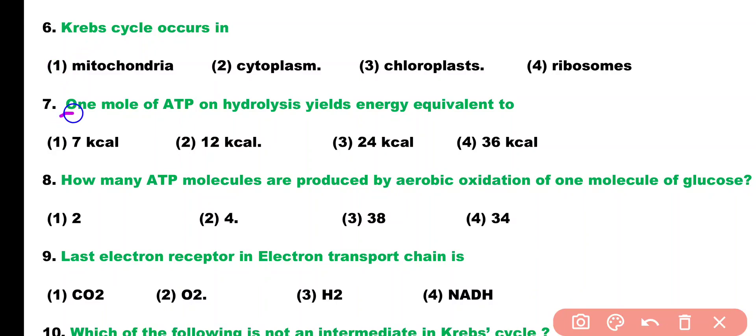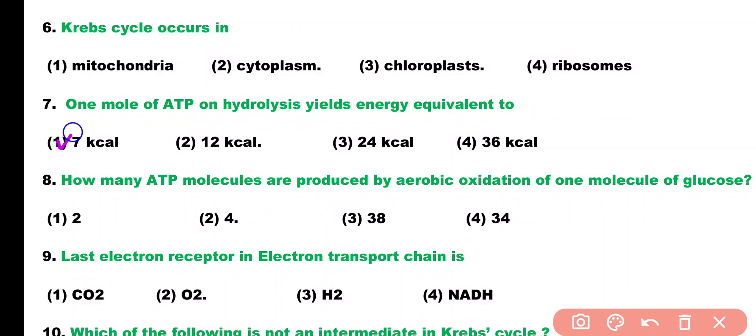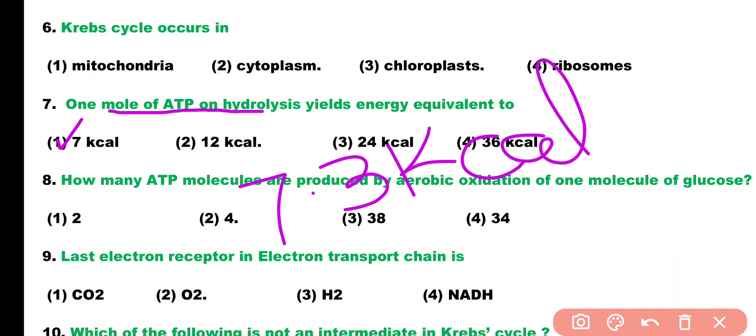Question number 7. 1 mole of ATP on hydrolysis yields energy equivalent to: 7 kcal, 12 kcal, 24 kcal, or 36 kcal. Correct answer is option 1. 1 mole of ATP on hydrolysis yields almost 7.3 kcal of energy.